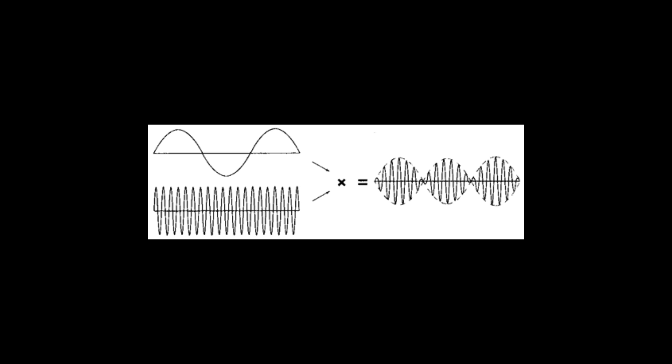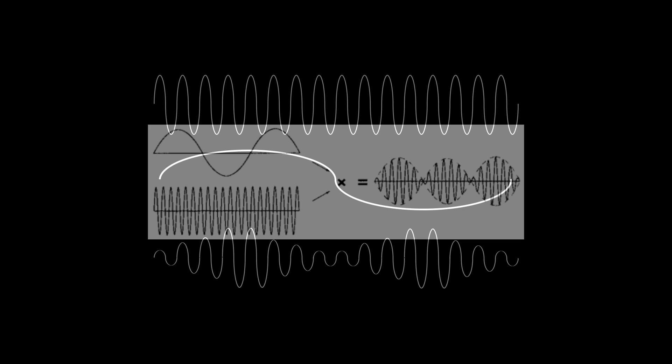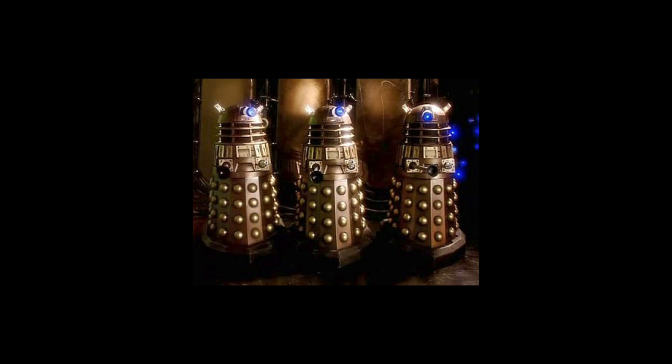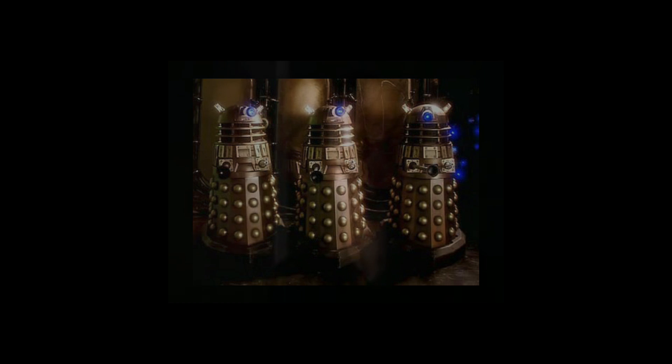Ring modulation is a method of frequency mixing two signals, resulting in a complex combination of harmonics from the sum and difference of the two signals being mixed. A form of amplitude modulation, ring modulation was used in early science fiction television and film production to achieve strange and unnatural sound effects, including the classic voice of the Dalek from Doctor Who.